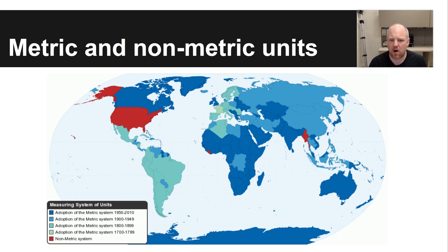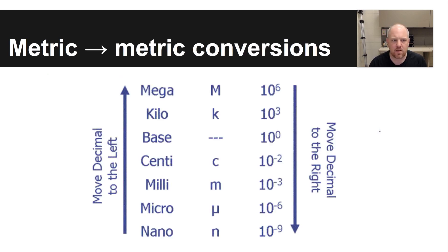Non-metric units, on the other hand, don't have a lot of sensible conversion factors. There are 5,280 feet in a mile, two cups in a pint, two pints in a quart, and four quarts in a gallon — they can be difficult to remember. The wonderful thing about the metric system is that it uses prefixes that indicate how many decimal places to move. For example, kilo means 1,000, so a kilometer is 1,000 meters, and centi means 1/100, so a centimeter is 1/100 of a meter. They're very easy to convert between.